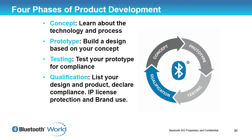Prototyping is where you build a design based on that concept. Then you need to test that prototype, not only to make sure it works but to make sure it is compliant with the Bluetooth specifications. Once it is compliant, you can then qualify it — meaning you list your device and product and declare that your device is compliant with the Bluetooth specification. The benefit of that is you can then use the Bluetooth brand to promote that product, which is a huge benefit for going through all of this process.